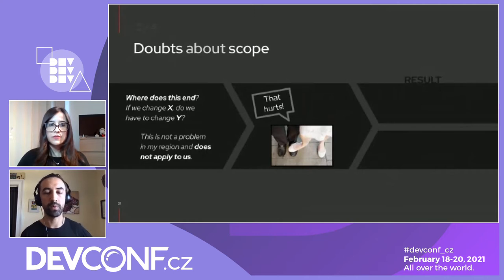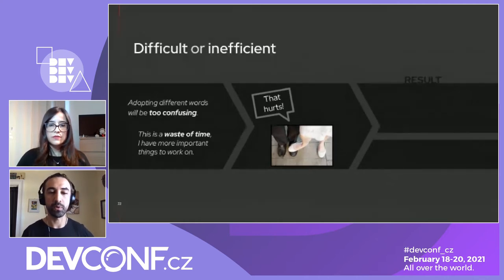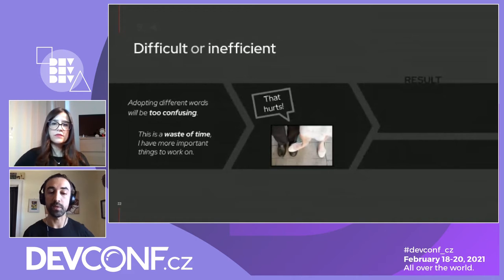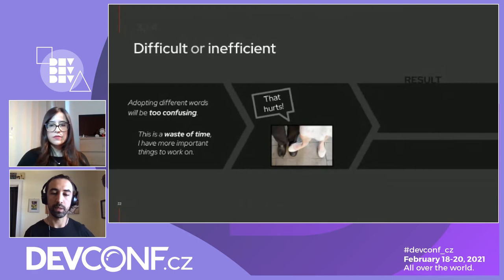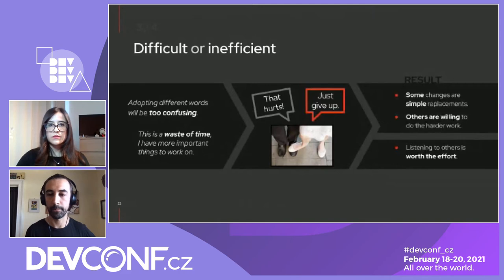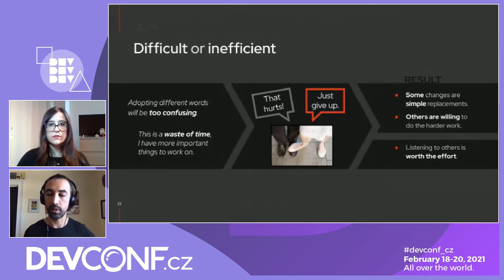The third category is people claiming it's difficult or inefficient — saying the old words were okay, finding different words will be too confusing, or this is a waste of time with more important things to work on. That's like you saying 'that hurts' and the other person saying 'well, just give up.' We would say that some changes could be simple replacements, and for the harder changes there are many people very willing to do that work. Listening is worth the effort.